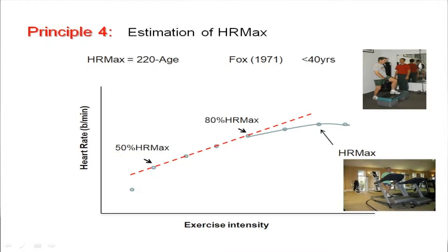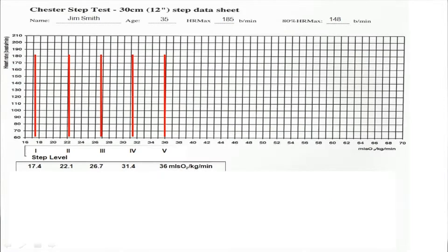We can put this data onto the Chester Step Test graphical data sheet. For example, stepping at level 1 with a 30-centimetre step, the oxygen cost is 17.4 mils; level 2, 22.1 mils; level 3, 26.7; level 4, 31.4; and level 5, which is 35 steps a minute, the oxygen cost is 36.0 mils per kilogram per minute.